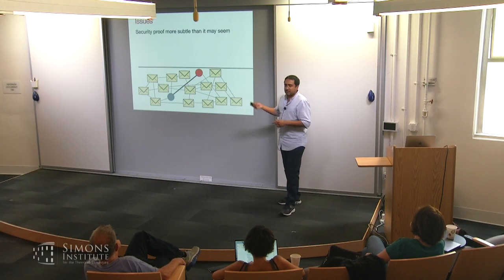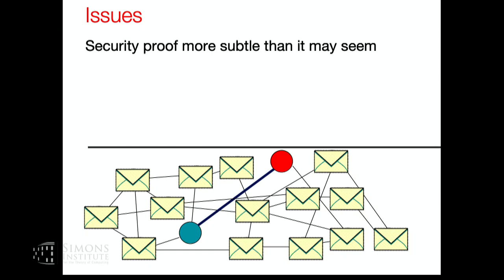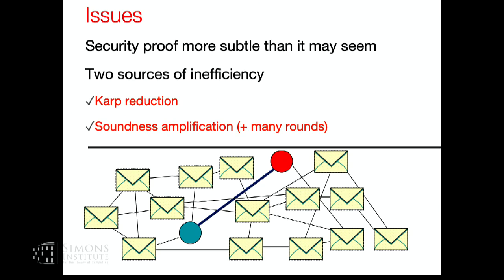There are practical issues: NP-reductions to graph 3-coloring are complex and essentially nobody implements ZK proofs via an arbitrary NP statement reduced to graph 3-coloring. Soundness amplification by sequential repetition is also expensive in practice. So I'm going to give another way of constructing zero-knowledge for all of NP—via secure multiparty computation—which addresses some of these issues and gives much richer zero-knowledge proof systems.